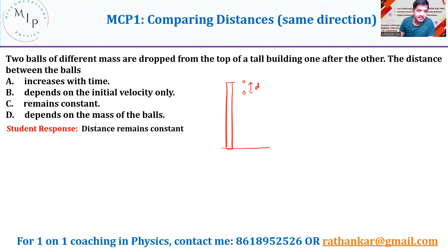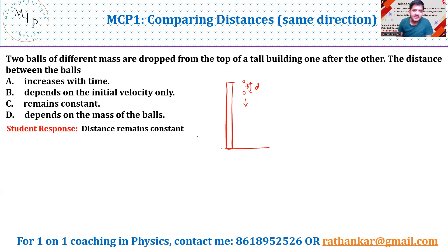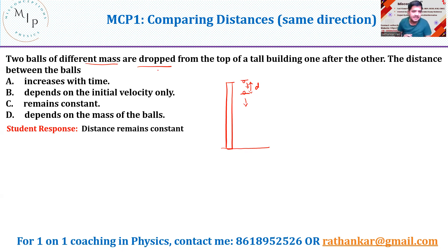The answer most students gave me is that the distance remains constant, because gravity acts on both of them equally, so there should be no change in distance. Some also said maybe the first is thrown with a higher velocity and the second with a lower velocity, so the distance might differ. But when you re-read the question, it says dropped — which means the initial velocity is zero for both. So it does not depend on initial velocity.